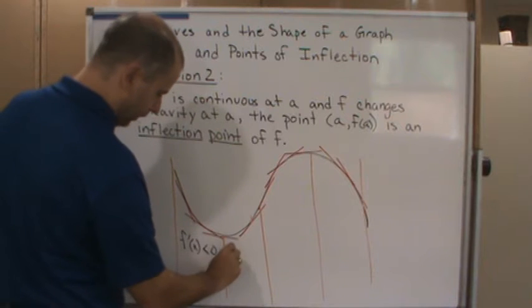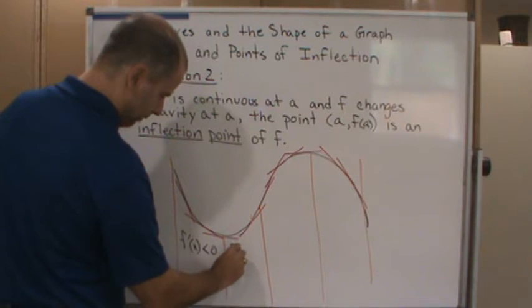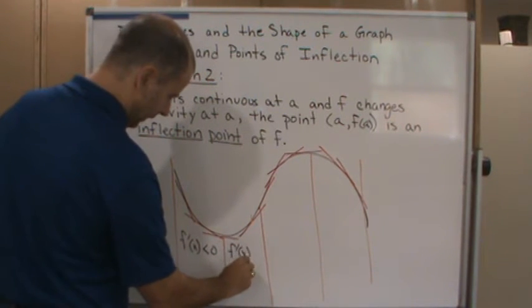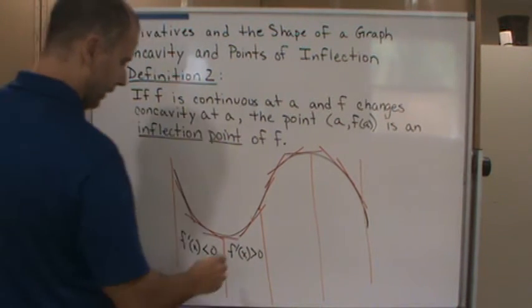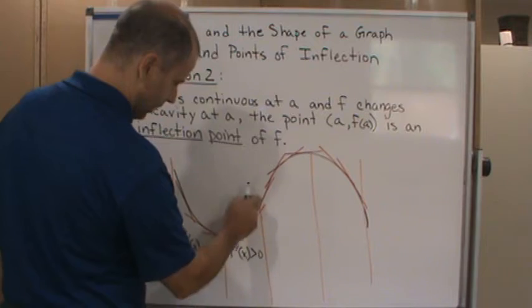And over here, at this minimum point it changes, so f prime of x is now greater than zero. And here's the inflection point where this line is at.